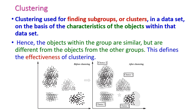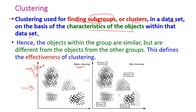First, let us see what clustering is. Clustering is used for finding the subgroups or clusters in a data set on the basis of characteristics of the objects within the data set. This is our data set before clustering — the raw data with no labels. This raw data is given to the clustering algorithm, and the algorithm will find the subgroups or clusters.